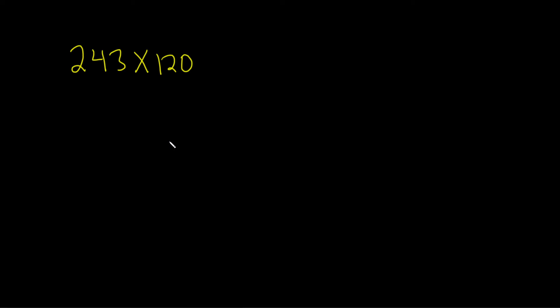In this problem we're going to multiply 243 by 120. So we'll start by writing down the 243, and right below it we'll write down 120. Then we draw a line and we put the times symbol.